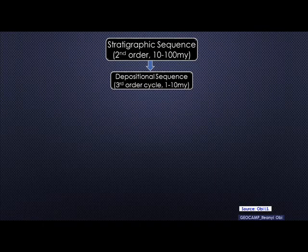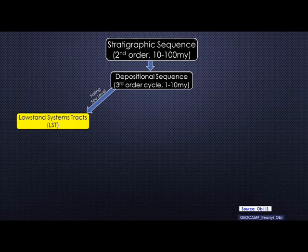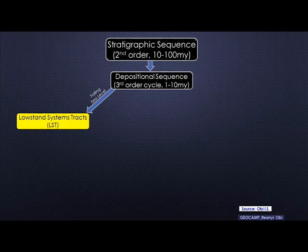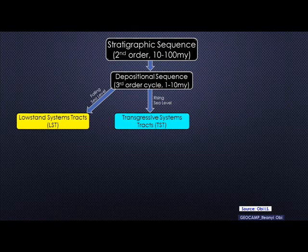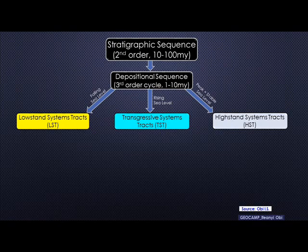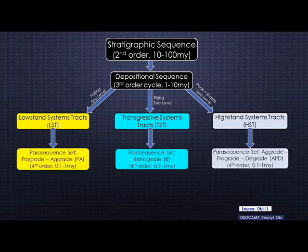At the first part of the sea level cycle, let's assume the sea level was falling. The package associated with that is called the lowstand systems track — that's the falling sea level phase. Then there's another episode where the sea level reaches its lowest elevation and begins to rise; that's the transgressive systems track. Finally, there's a phase where the sea level has reached a peak elevation and is stable, and the packages associated with that are called the highstand systems track.